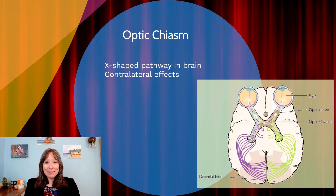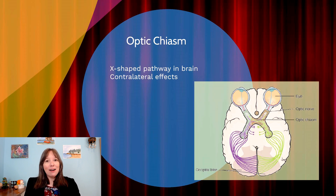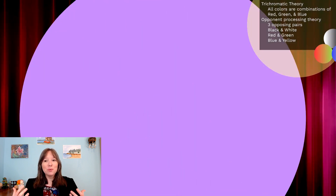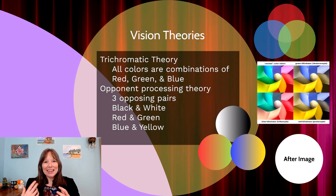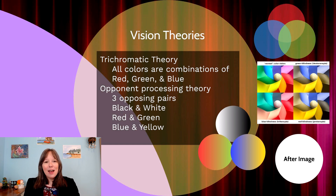Now that we've finished talking about the eye, we're going to talk about some visual theories. We already talked about the additive and subtractive theories of light — adding or removing wavelengths to get a mixing that results in more white or more dark light.